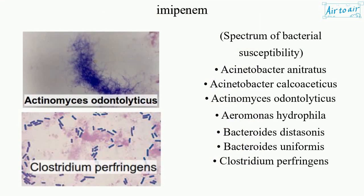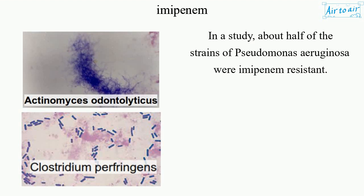Spectrum of bacterial susceptibility: Acinetobacter anitratus, Acinetobacter calcoaceticus, Actinomyces odontolyticus, Aeromonas hydrophila, Bacteroides distasonis, Bacteroides uniformis, Clostridium perfringens. In a study, about half of the strains of Pseudomonas aeruginosa were Imipenem-resistant.